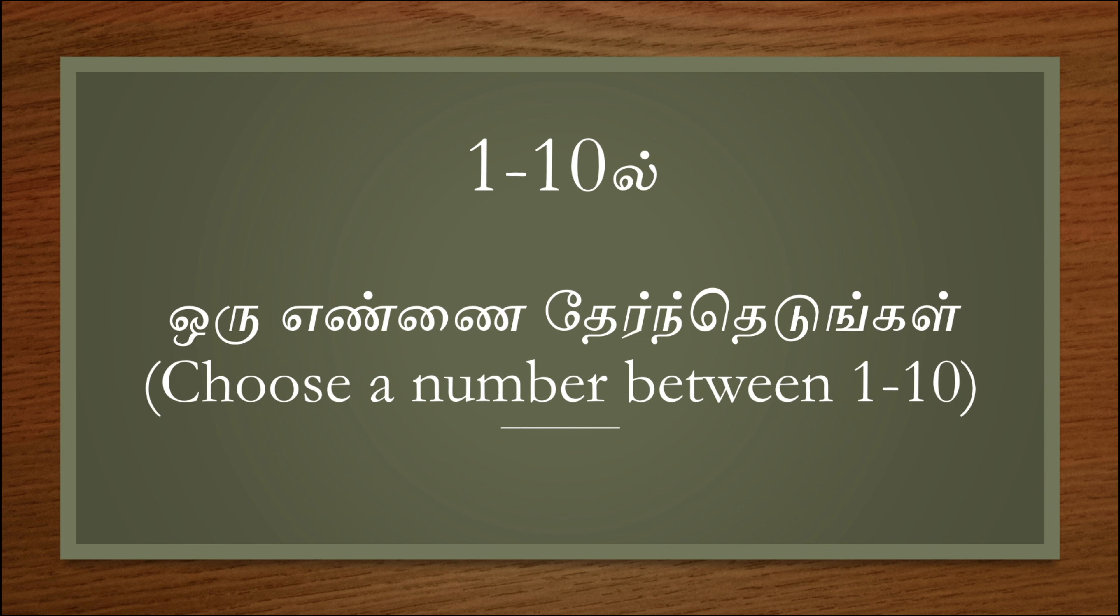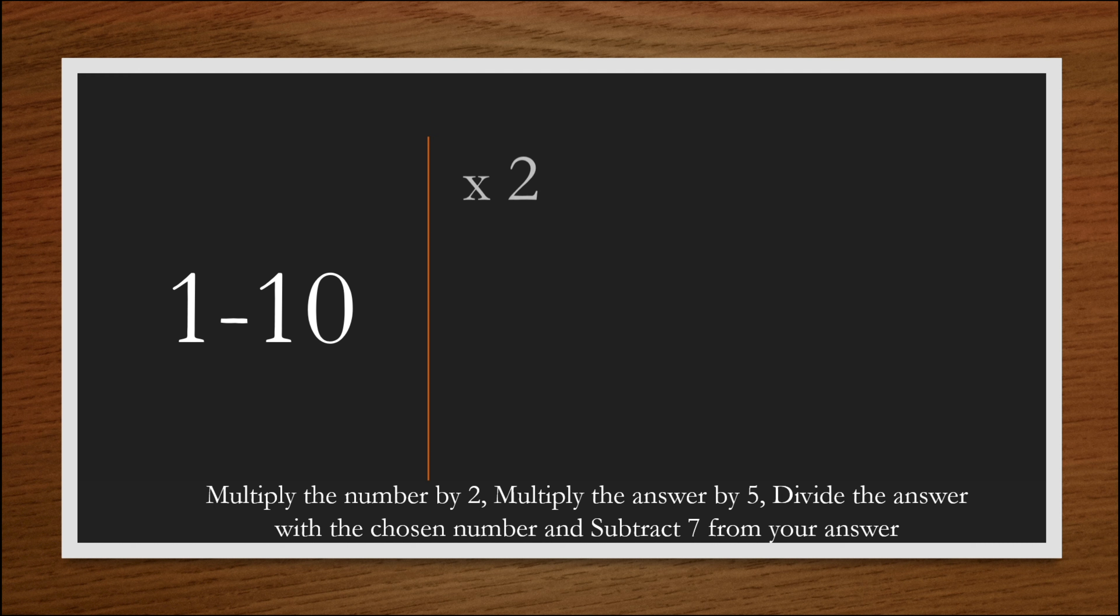Choose a number from 1 to 10. Multiply the number by 2, then multiply by 5. So if you choose 5, you get 50. Then divide by 10. Then subtract 7, and you get 3.